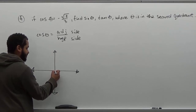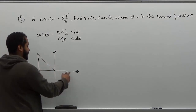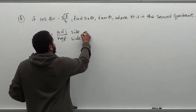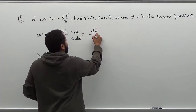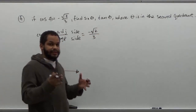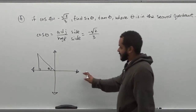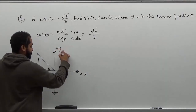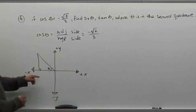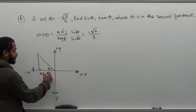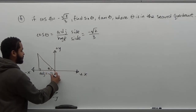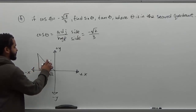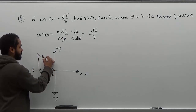Every reference angle pertains to the x-axis. Here we have our angle theta, our right angle, and the adjacent side, which in this case is going to be negative radical two. The hypotenuse is always positive, so we apply the negative to the adjacent side because we're in the second quadrant — x is negative on the left, positive on the right; y is positive above and negative below. The hypotenuse is the longest side, and its value is three.